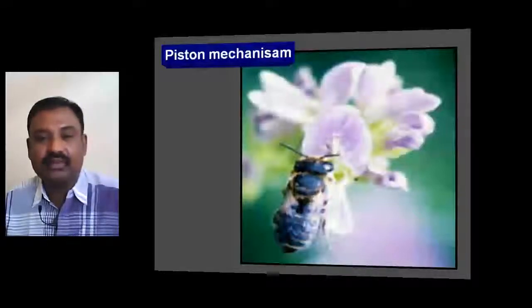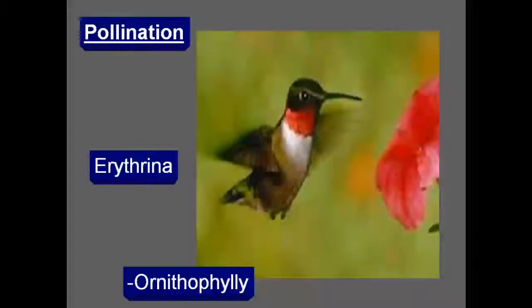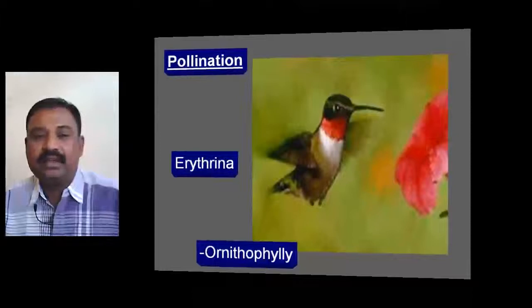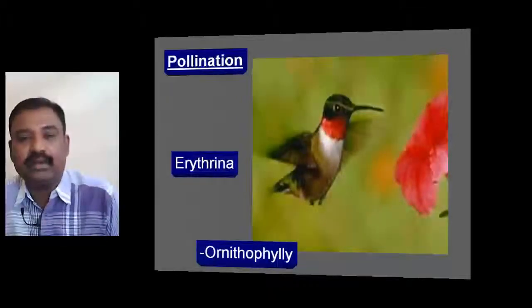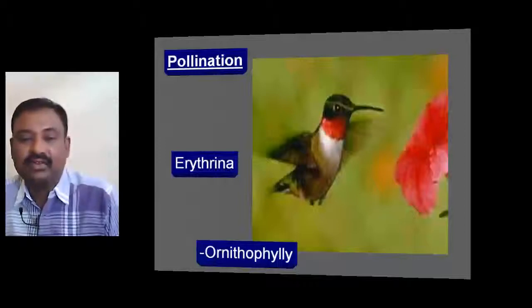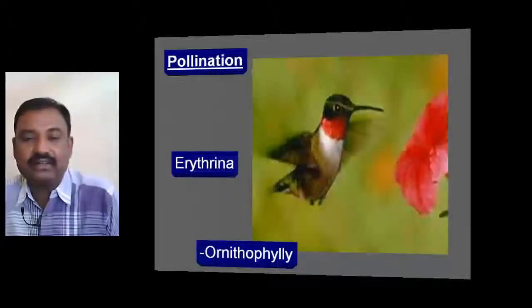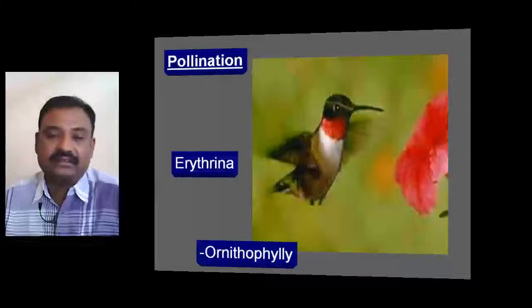This is the characteristic feature of Fabaceae. Generally, entomophily takes place in Fabaceae. But in Erythrina, pollination takes place with the help of birds — this is called ornithophily. Ornithophily occurs in Erythrina.